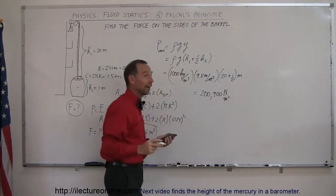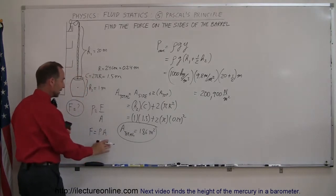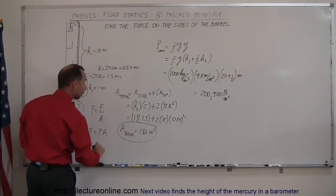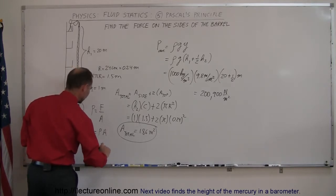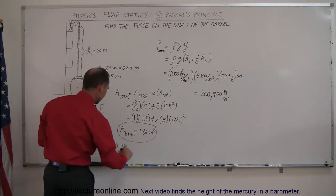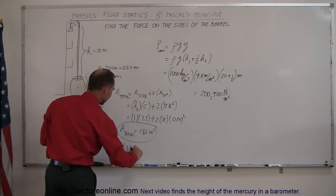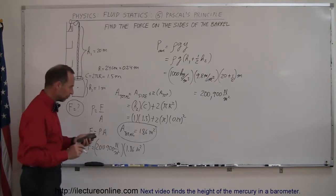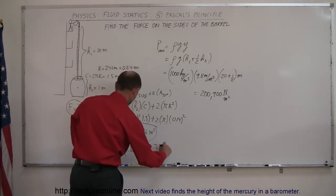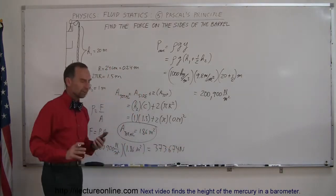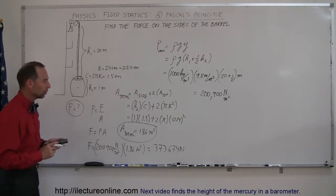Now we combine those two. We take the pressure we found and multiply times the area. The total force is equal to the pressure, which is 200,900 newtons per square meter, times an area of 1.86 square meters. We get a total force of 373,674 newtons—way too many significant figures—but rounded off, it's about 374,000 newtons.